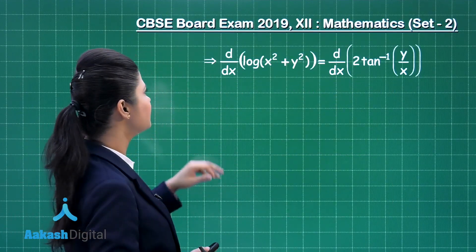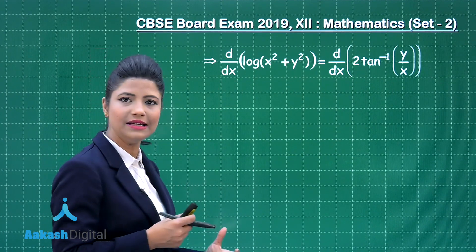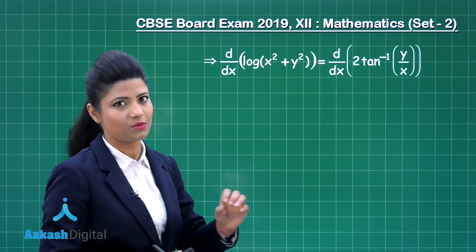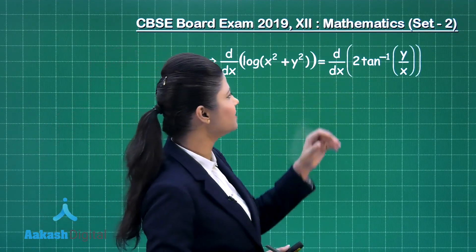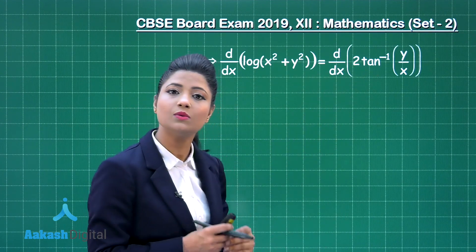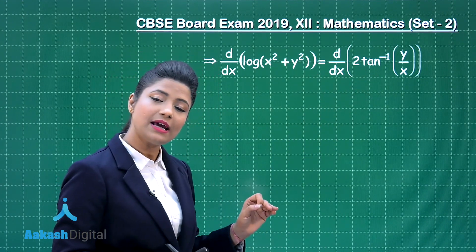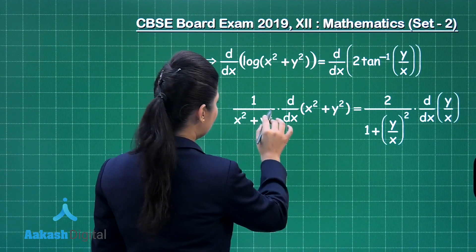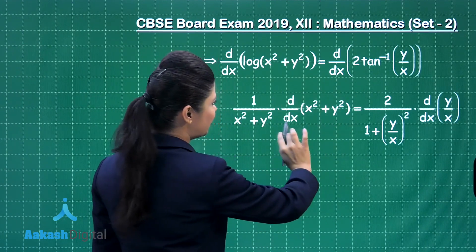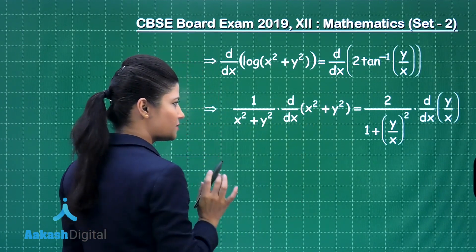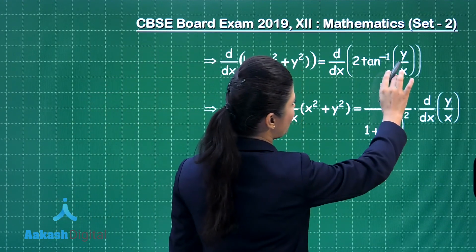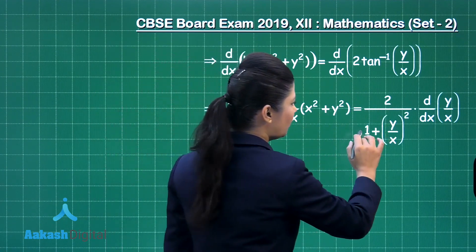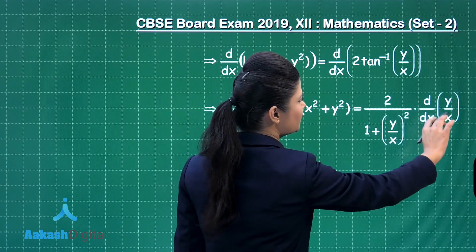When differentiating with respect to x, you first differentiate with respect to x squared plus y squared, then differentiate x squared plus y squared with respect to x. Similarly, you first differentiate tan inverse of y upon x with respect to y upon x, then differentiate y upon x with respect to x. This results in 1 upon x squared plus y squared, and differentiating tan inverse of y upon x with respect to y upon x gives 1 upon 1 plus (y upon x) squared.